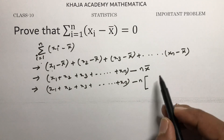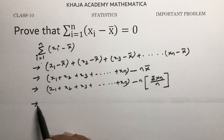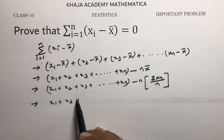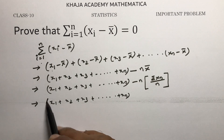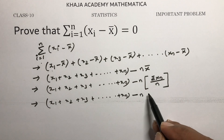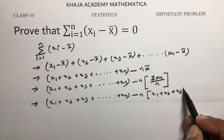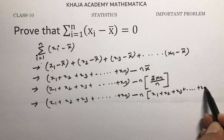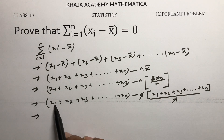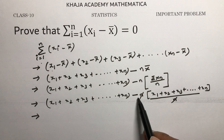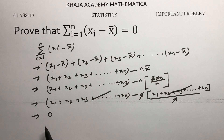The mean X̄ is the sum of n observations divided by the number of observations, so nX̄ equals X₁ plus X₂ plus X₃ plus so on Xₙ. Substituting this in, the two sums cancel each other out, and the answer is 0.